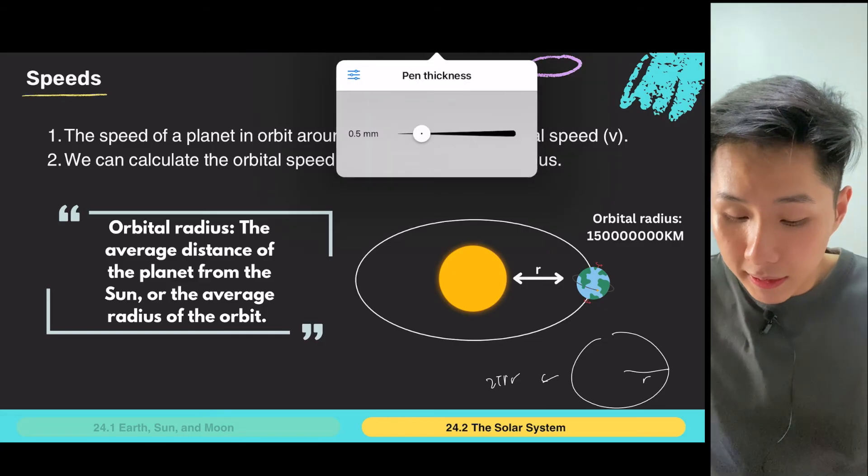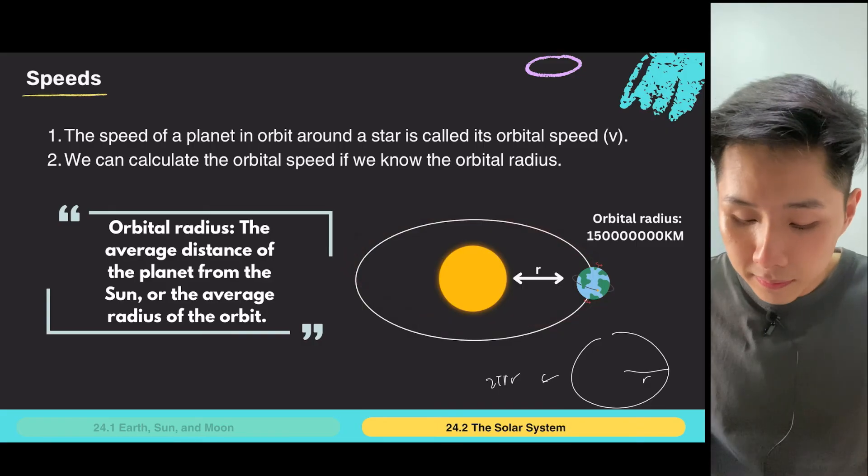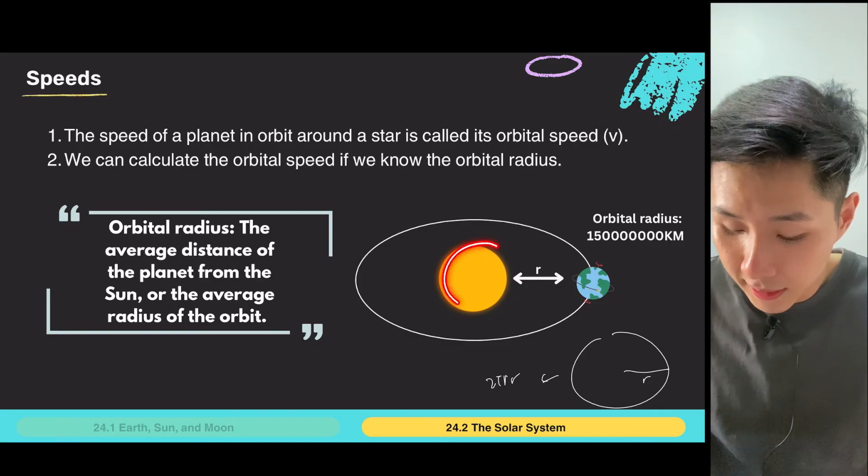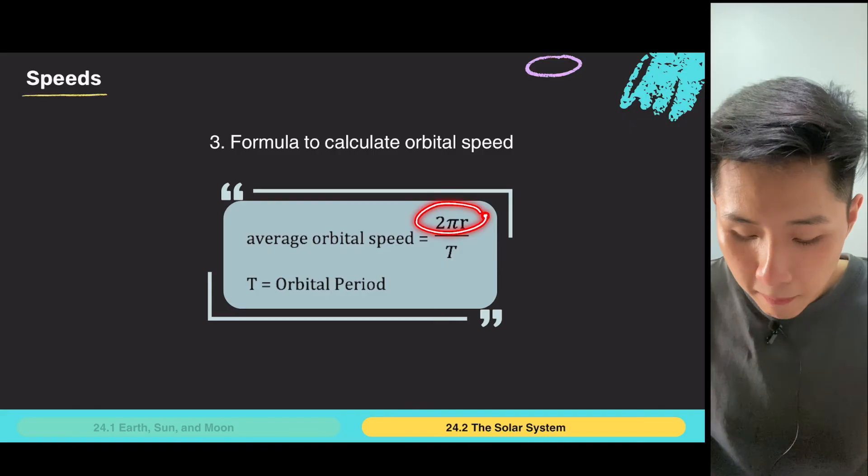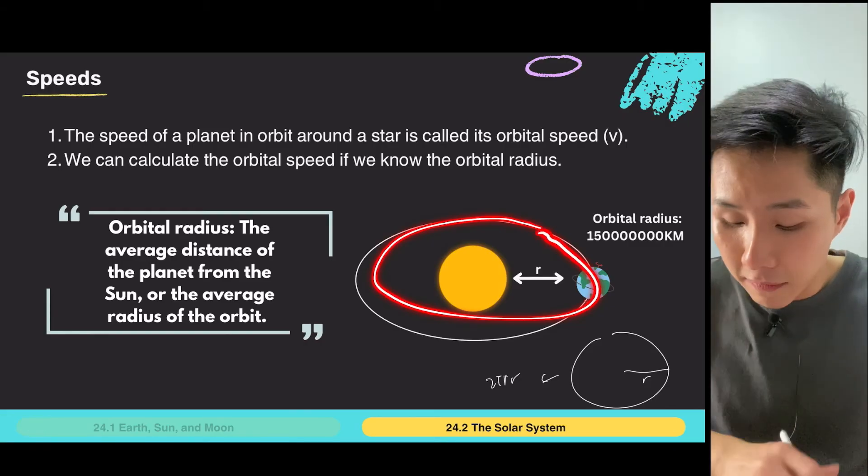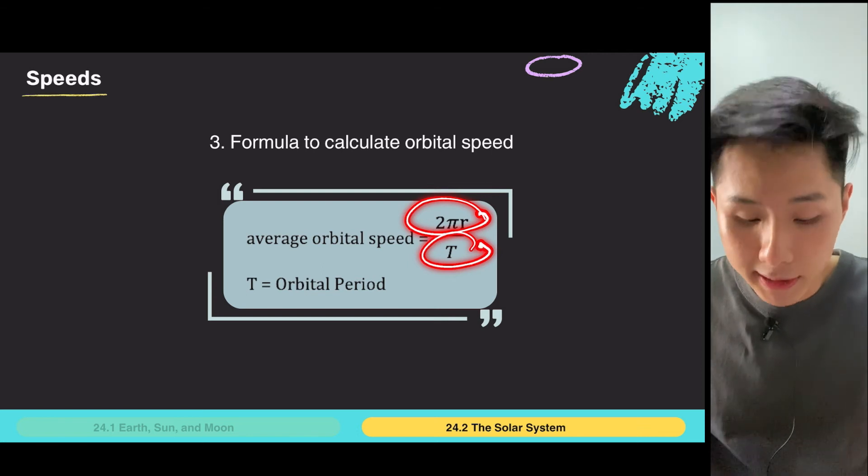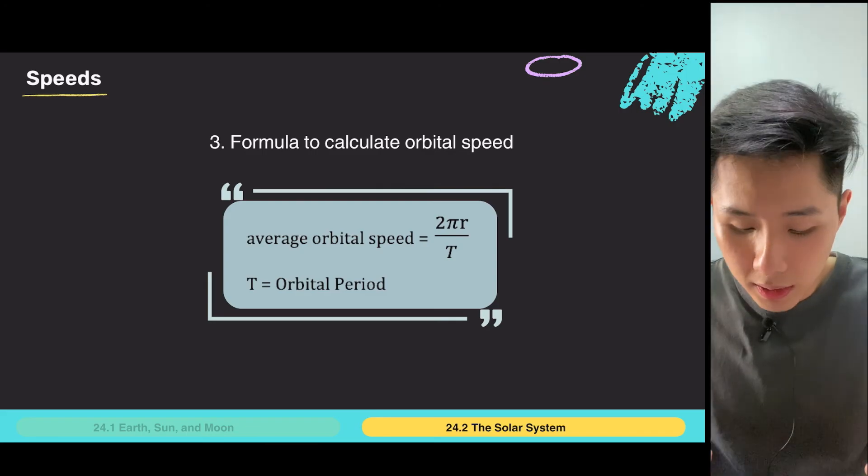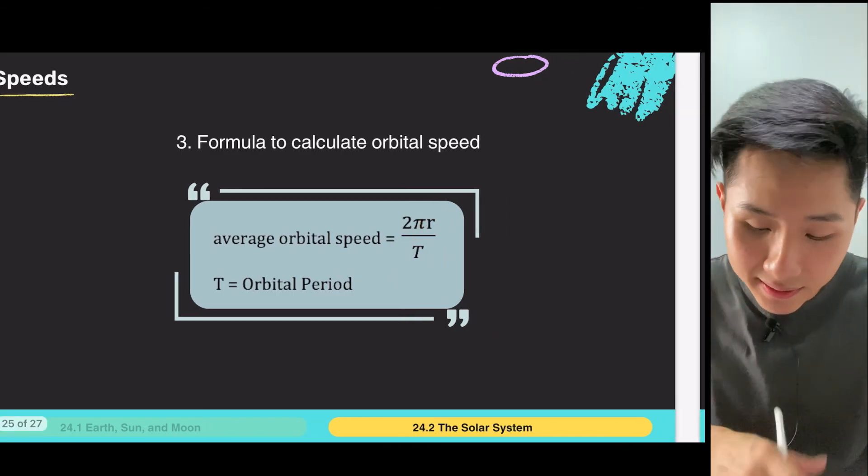So, by calculating the circumference, we'll be able to know the distance that is traveled by the Earth. And therefore, if you want to calculate how fast the Earth orbits the sun, we can simply use the formula 2 pi r. r is the orbital radius, divided by orbital period, which is how long does it take for Earth to travel just one cycle. And if you have that, this is the distance. Distance divided by time, it will give us the speed. And hence, that's where you get the average orbital speed. You need the orbital radius and also the orbital period. And that's it.